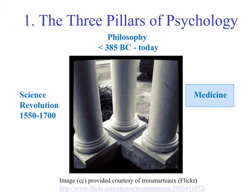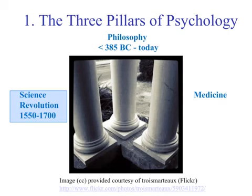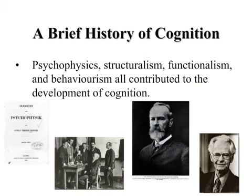Philosophers have also been interested in topics such as emotion and how it relates to our thinking. Another very important area that dates back as far as the philosophers is medicine — we've always been interested in what the brain does. For some it was a cooling mechanism; for others it was the source of the mind and our mental processes. The third component was the scientific revolution from about 1550 to the 1700s. Those three components — philosophy, medicine, and science — all led to the emergence of psychology.